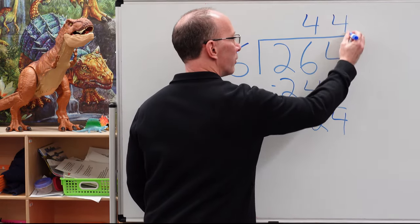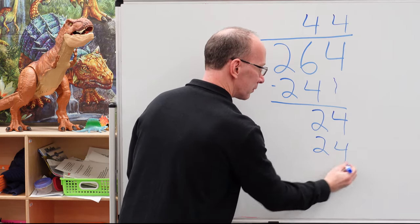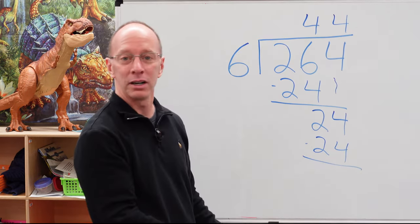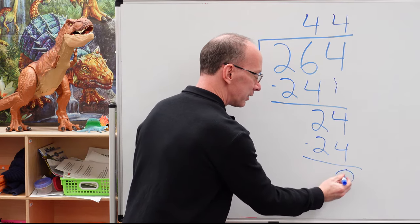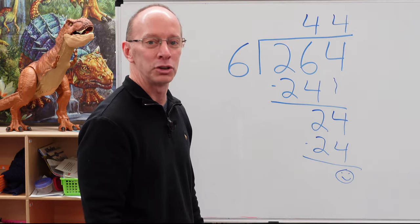Six times four is 24. We did that before. Remember right here? Four times six, 24, with a remainder of zero. Put a little smiley face there if you want to. Ready to do another one? Yeah. Let's do it.